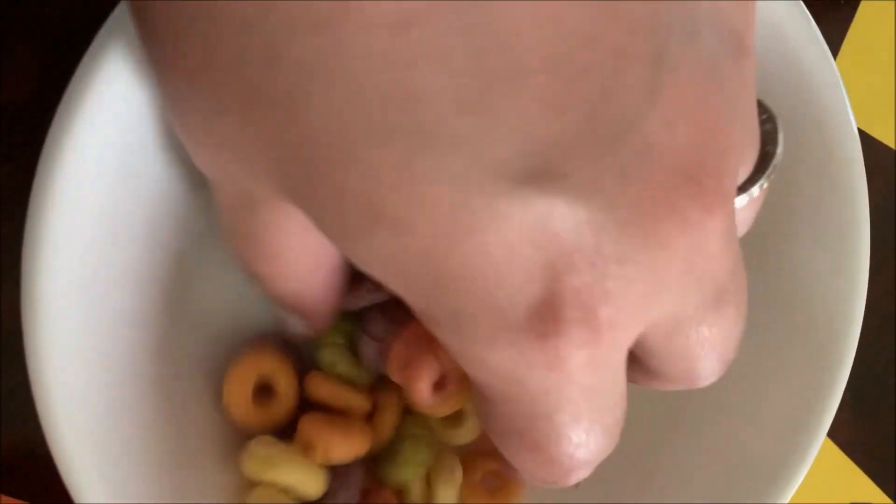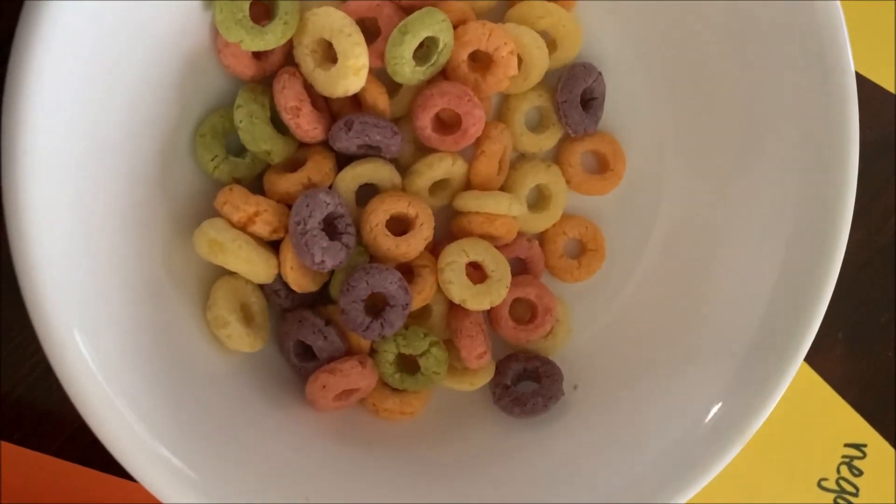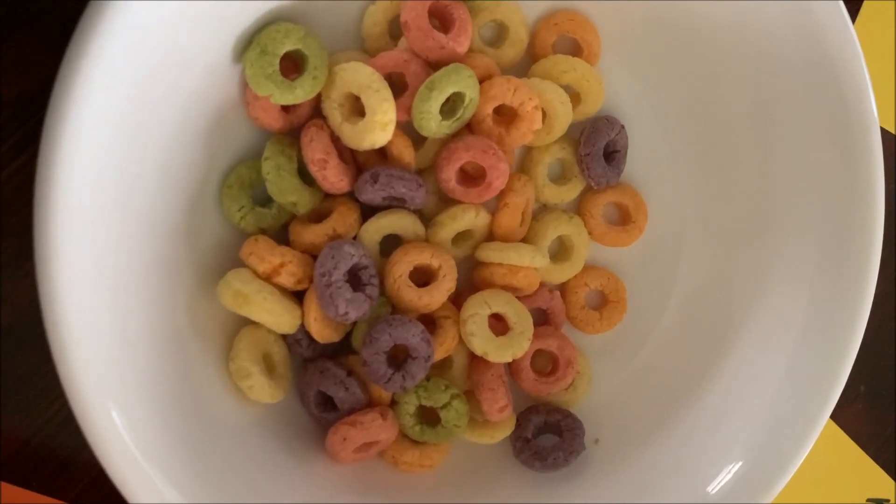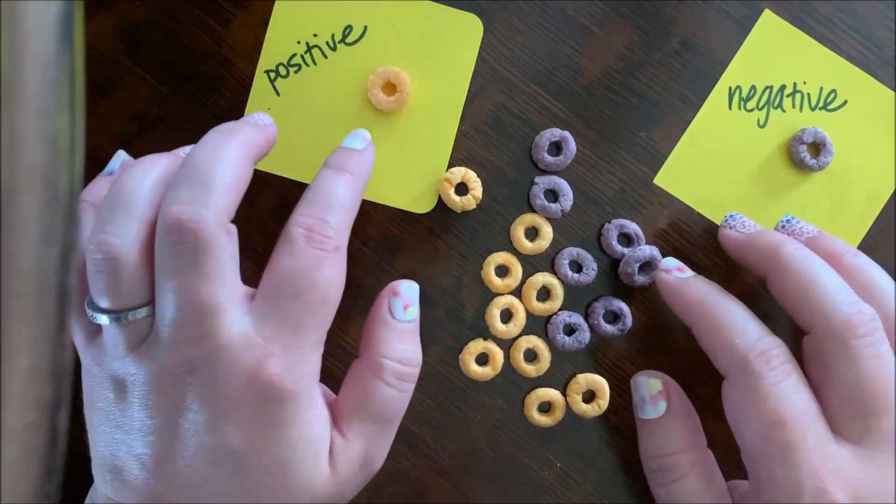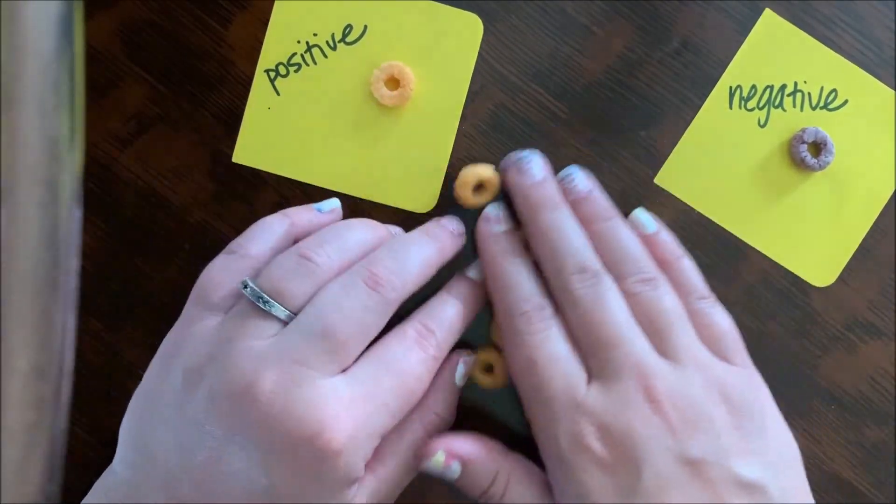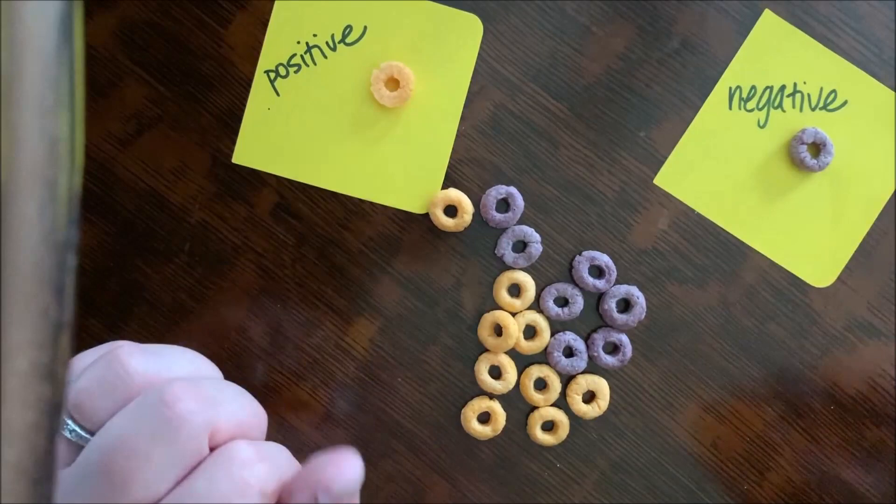A bowl of cereal can be a great way to make some models to solve integer problems. I've got my little key. These are my positives, these little orange cereals. These are my negatives, these little purple cereals.